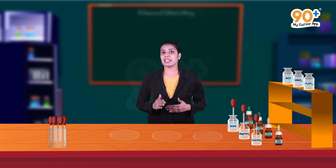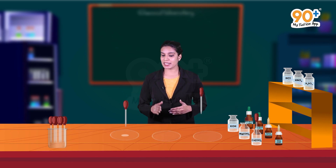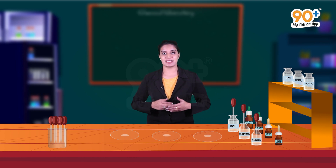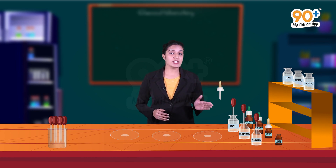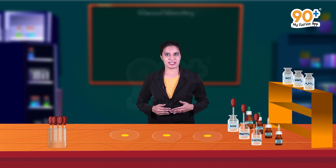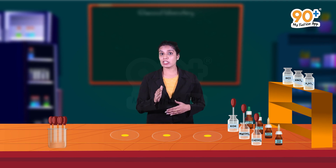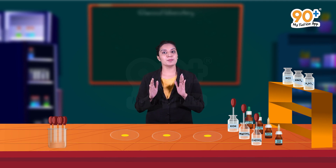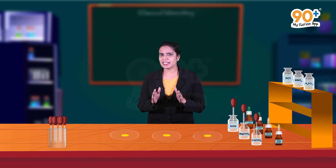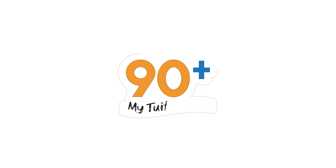Now let's take one drop of potassium hydroxide, magnesium hydroxide, and calcium hydroxide in three watch glasses, and add one drop of methyl orange to each of them. See, the solution turns yellow color. Methyl orange gives such a color change only if it meets something basic in nature. Hence, it is very clear that all these items are bases.